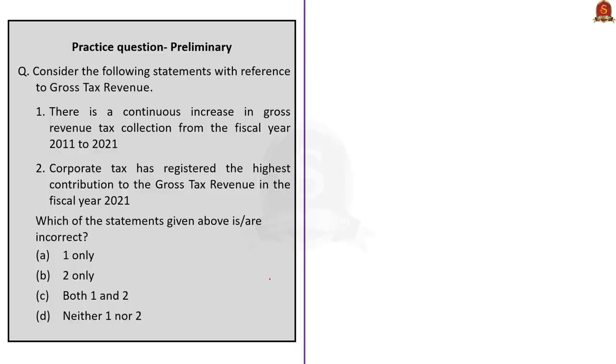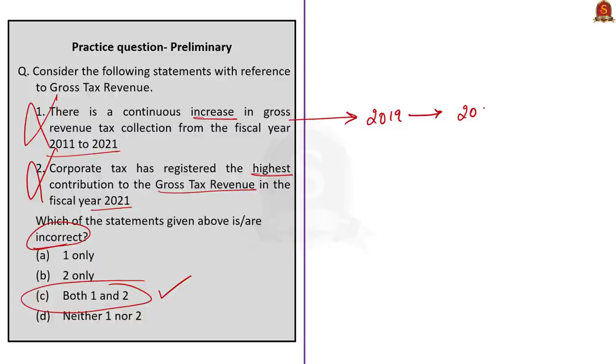Now, let us move on to the next question. Second question. Consider the following statements with reference to gross tax revenue. First statement: There is a continuous increase in gross revenue tax collection from the fiscal year 2011 to 2021. Second statement: Corporate tax has registered the highest contribution to the gross tax revenue in the fiscal year 2021. Which of the statements given above are incorrect? The answer is option C, both one and two. Both the statements are incorrect. As per the data, the gross tax revenue collection reached its peak in financial year 2019 and declined in the fiscal year 2020. So, the first statement is wrong. Similarly, when you take the second statement, from our discussion we saw that fiscal year 2021 income tax registered highest contribution to the gross tax revenue. So, second statement is also wrong. The answer is C, both one and two. Both the statements are incorrect.